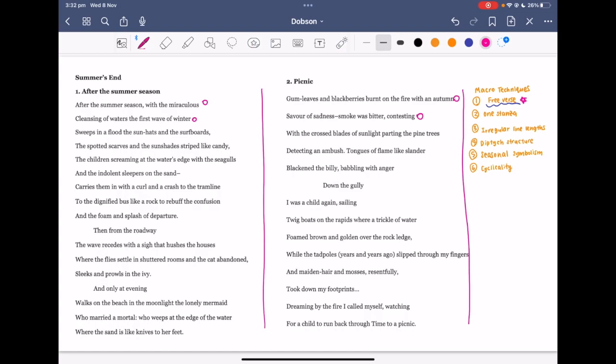We could also think about the irregular line lengths. So in the first poem, we can see how these short lines, it kind of reflects the movements of the waves coming in and out. So here, it reflects movement of waves. And in the second poem, we have like a short line there. And basically, for the second poem, I think we could talk about how it reflects the fragmented thought process of the persona or the fragmented thoughts of the persona as she goes in and out of the past.